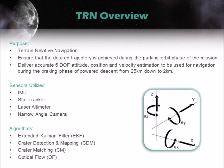Terrain Relative Navigation is the process by which images of surface terrain are analyzed to determine the current location of the spacecraft. By systematically identifying and matching craters on the surface to a database stored on board, it is possible to estimate the current location of the lander with a high degree of accuracy.